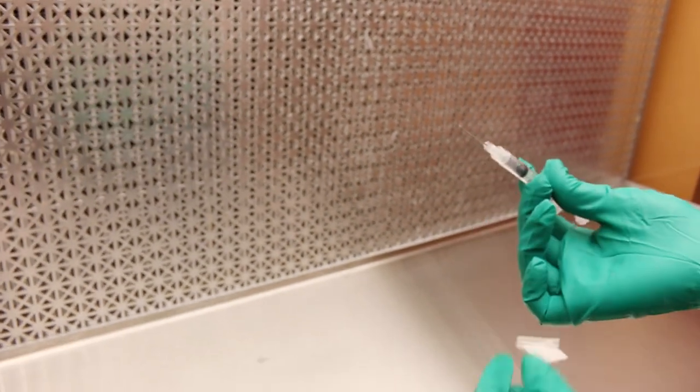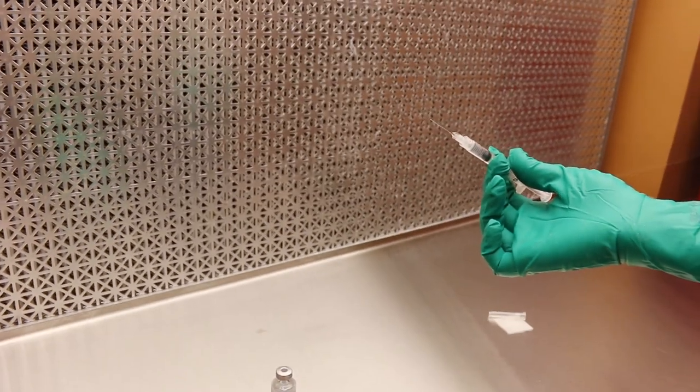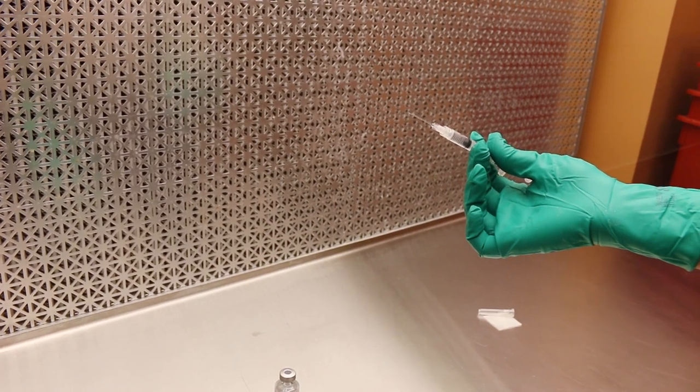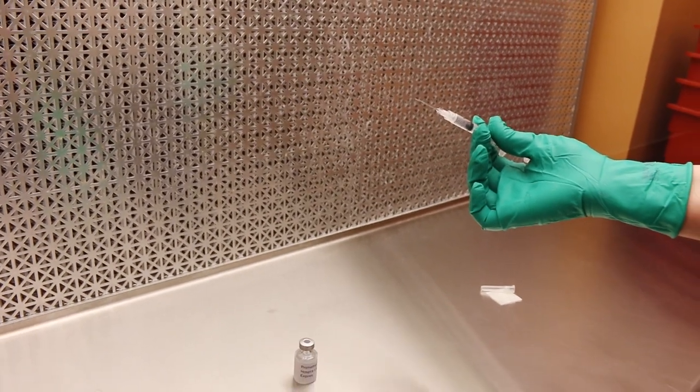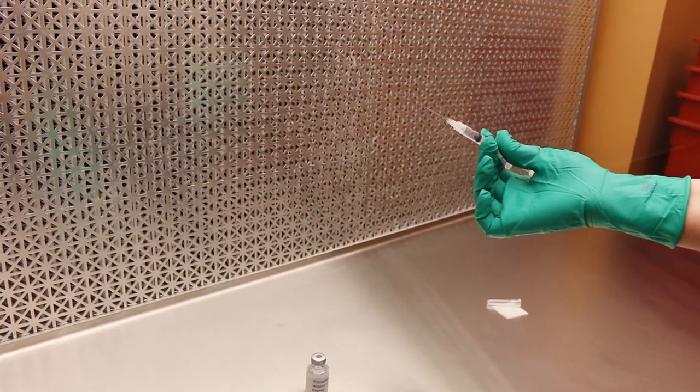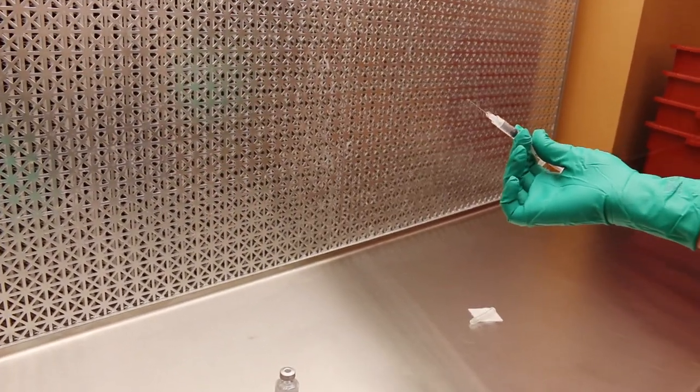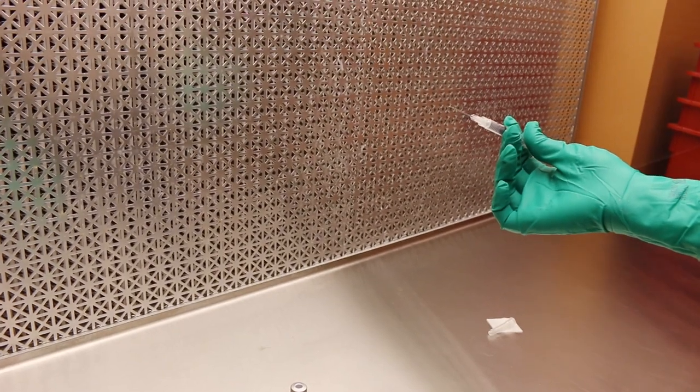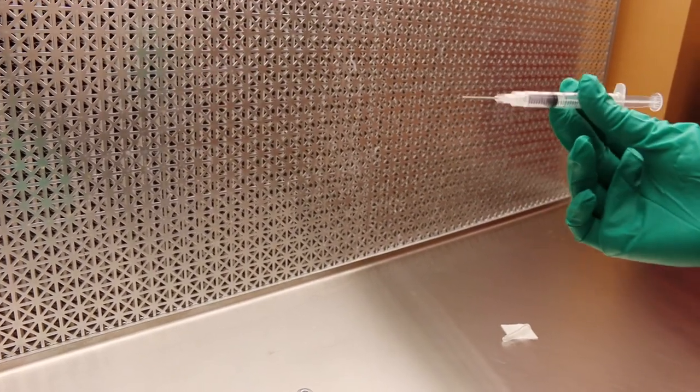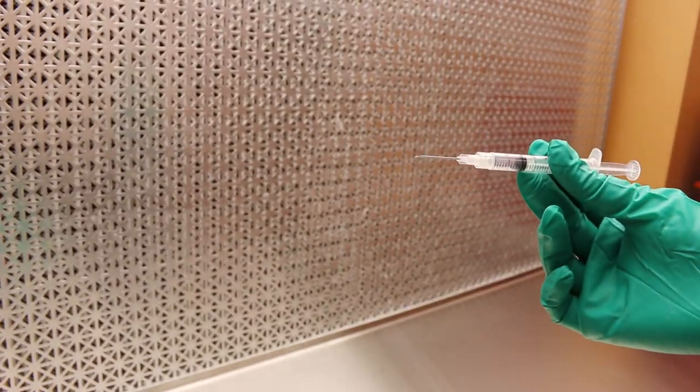Step sixteen, use the dominant hand to grasp the syringe at the barrel. Use your non-dominant hand to remove the needle cap, and place the cap on the alcohol swab on the hood's work surface. Step seventeen, use your fingers to rotate the barrel of the syringe so that the bevel of the needle is pointed toward the ceiling.